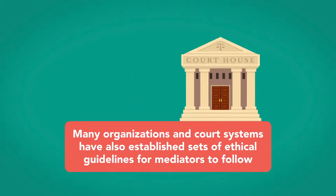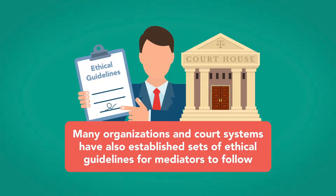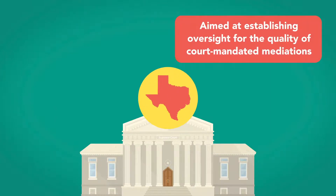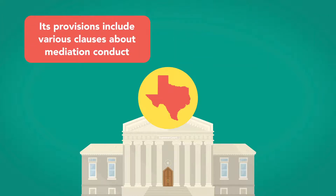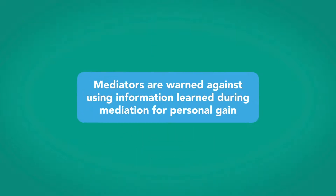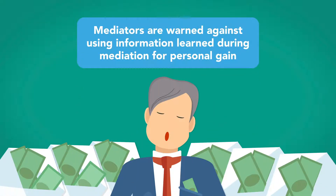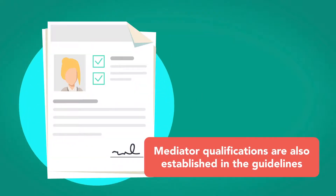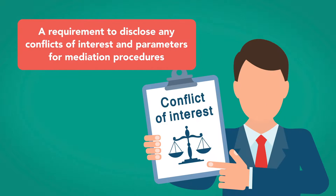Confidentiality is one method of ensuring quality within a mediation proceeding, but many organizations and court systems have also established sets of ethical guidelines for mediators to follow. Though they all vary in the details, they are commonly set up to provide mediators with guidance for appropriately conducting mediation proceedings. The Supreme Court of Texas adopted ethical guidelines aimed at establishing oversight for the quality of court-mandated mediations. Its provisions include various clauses about mediation conduct — for example, mediators are warned against using information learned during mediation for personal gain, and against placing the personal interests of the mediator above the interests of the parties in conflict. Mediator qualifications are also established in the guidelines, along with a requirement to disclose any conflicts of interest and parameters for mediation procedures.